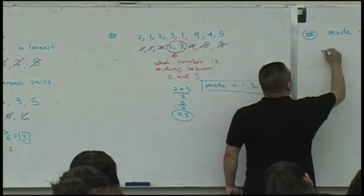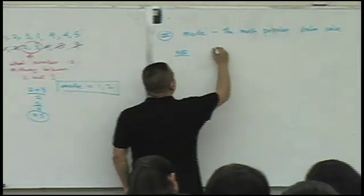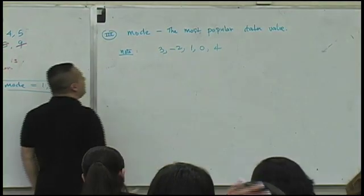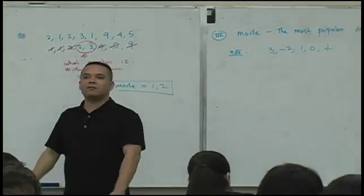Note. What if your data set looked like this? Three, negative two, one, zero, and a four. Can you tell me what is the mode here?